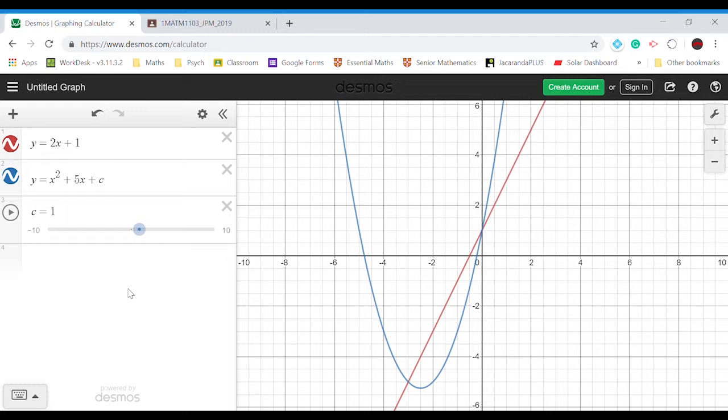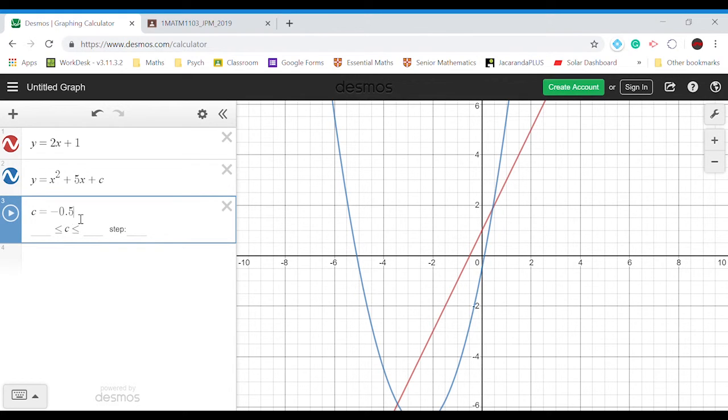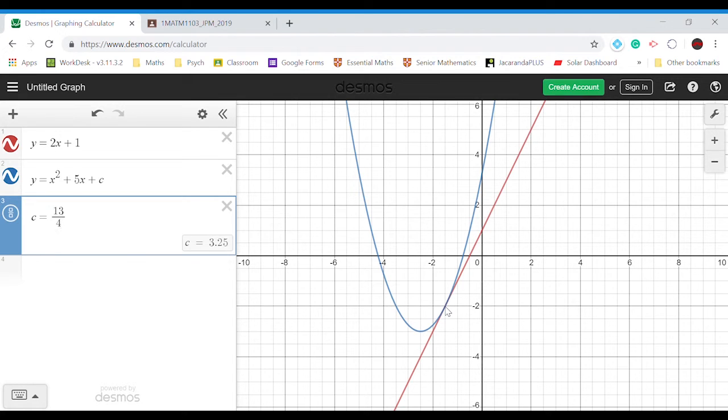And now that we know our answer should be 13 on 4, all the values that are less than, let's type in c equals 13 on 4 just to double check. And we can see that at 13 on 4, it looks like the graphs just touch at one separate point.